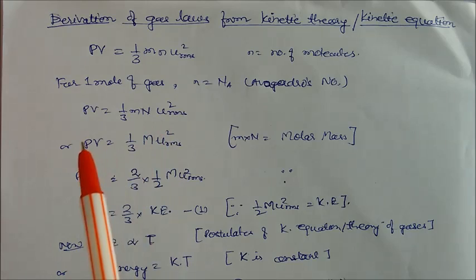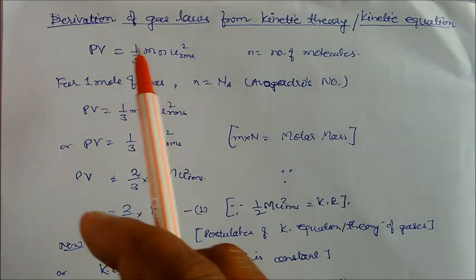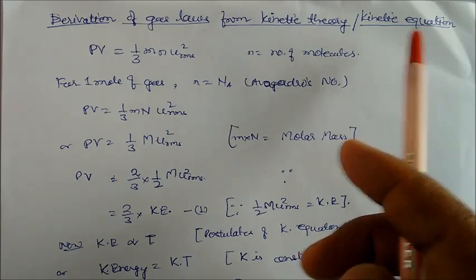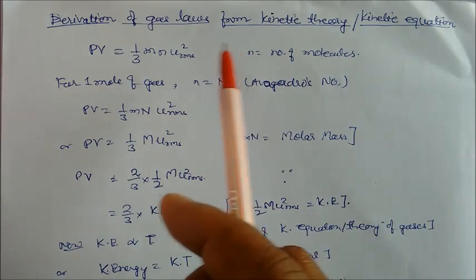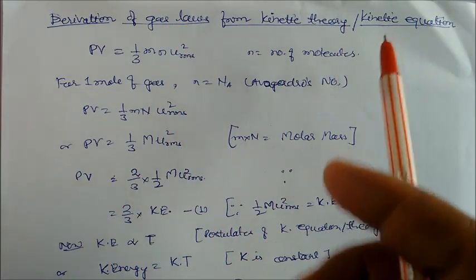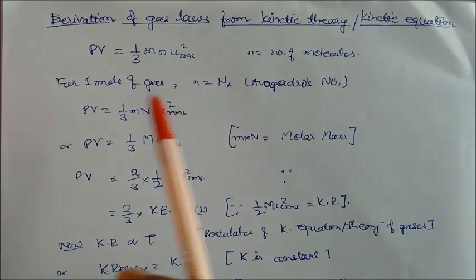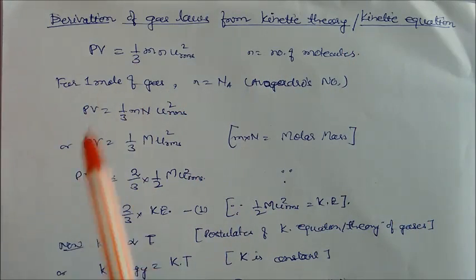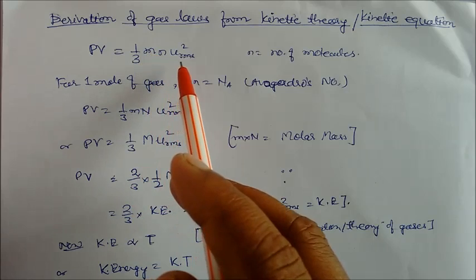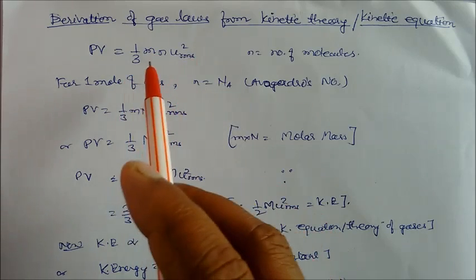Welcome to today's lecture. Today we will see the derivation of gas laws from the kinetic theory, or kinetic equations — how these gas laws can be derived from the kinetic equations. We have already seen that the kinetic equation is pV = (1/3) × m × N × u_rms².